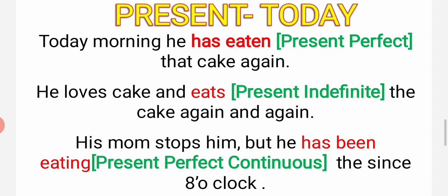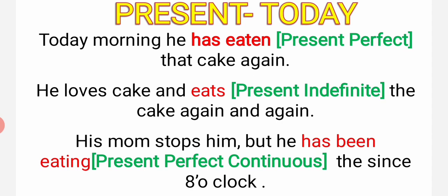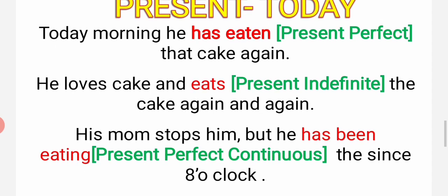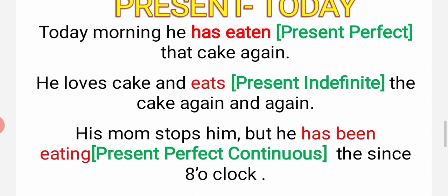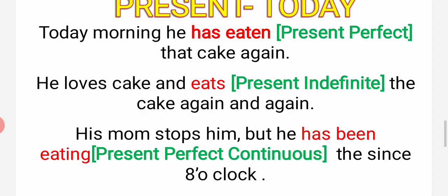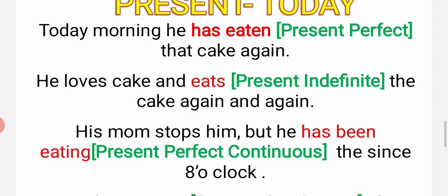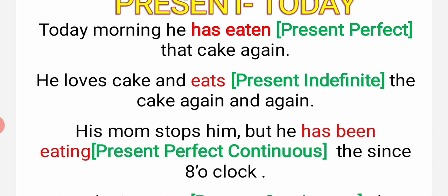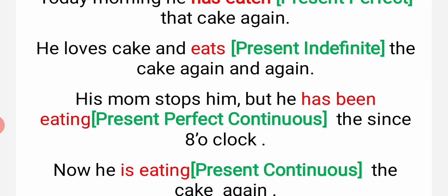Present - today. Today morning (aaj subaha), he has eaten the cake again. 'Eaten' - perfect. He has eaten. Helping verb 'has' will come because he is singular. Today morning Chandu has eaten - khaa chuka hai - the cake again. He loves cake and eats the cake again and again.